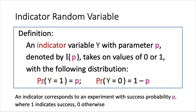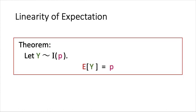Given this new random variable, what is the expected value? We claim that if Y is an indicator random variable with the same distribution as I(p) with parameter p, then the expected value of Y is equal to p.